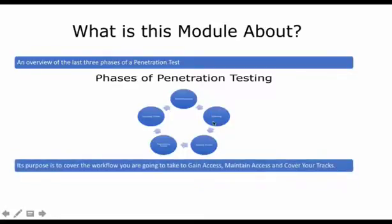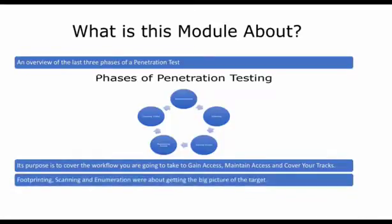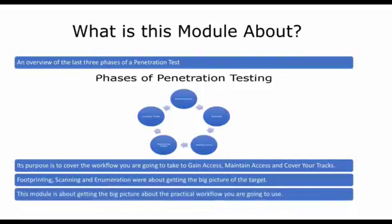The purpose of this module is to cover the workflow that you're going to take to gain access, maintain access, and cover your tracks. Footprinting, scanning, and enumeration were all about getting the big picture of the target—in other words, all the information you could possibly get about the target environment, what systems are running, ports open, etc. This module is about getting the big picture about the practical workflow you're going to use in the actual penetration test.